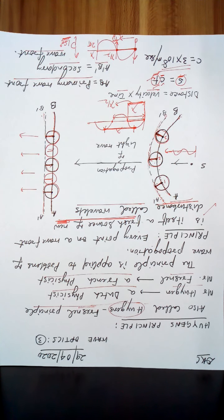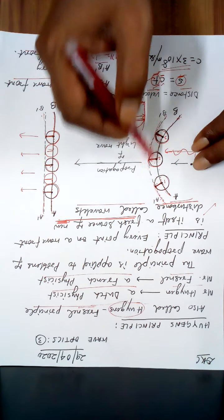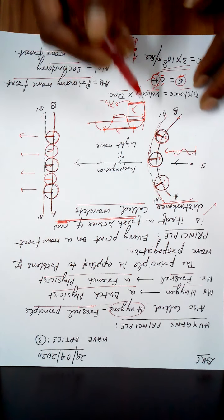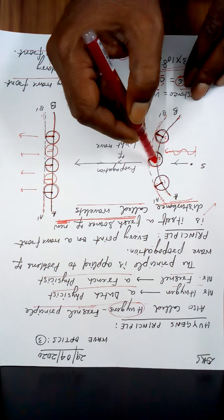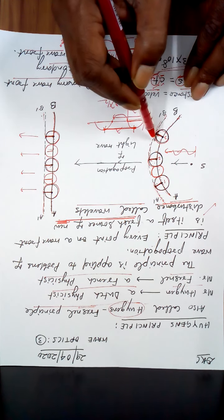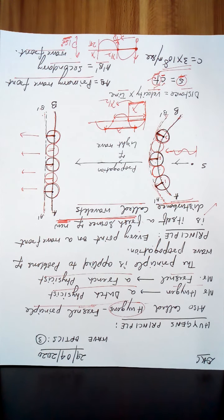So this is what Huygens' principle is: each point on a given wavefront acts as a new source of disturbance, sending out waves in the forward direction. To construct the new wavefront, we draw circles of a constant radius from each point and draw a common tangent — that common tangent is the new wavefront.